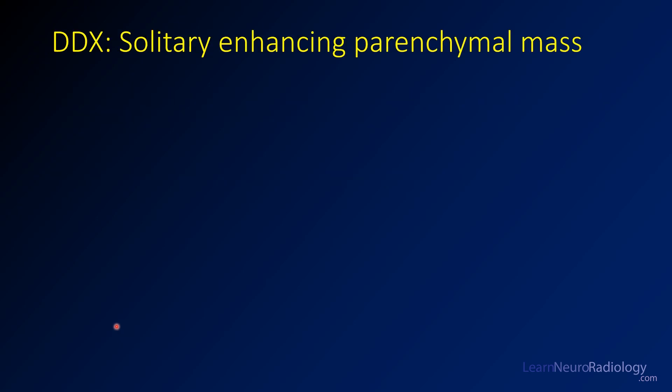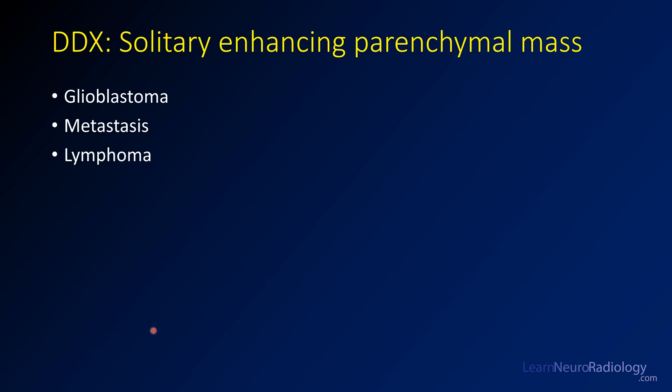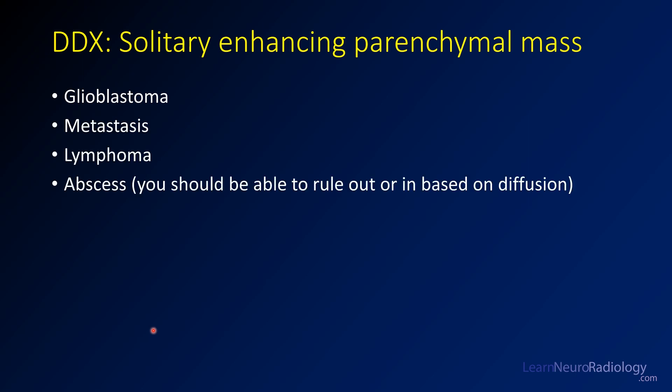One of the most common scenarios you may run into is a solitary enhancing parenchymal mass. So you see an enhancing mass and you only have one — you've got to come up with your differential. Your differential is going to be glioblastoma, metastases, lymphoma, and maybe abscess, although you should be able to tell the difference between an abscess and a tumor based on diffusion centrally.